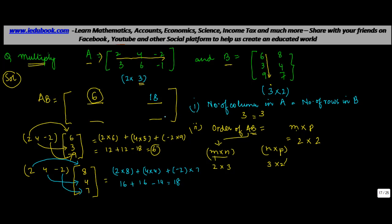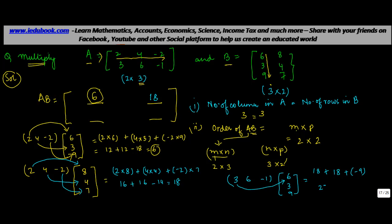For the second row, first column, you take the second row of A — which is 3, 6, −1 — and multiply by the first column of B: 6, 3, 9. So: 3×6 = 18, plus 6×3 = 18, plus (−1)×9 = −9. The sum is 27, which goes into the second row, first column of AB.